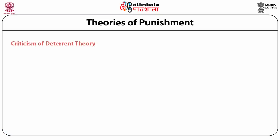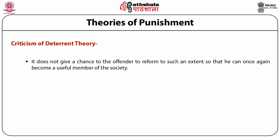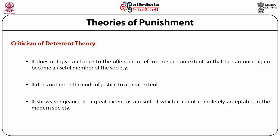Cases of harassment for dowry, dowry death, and bride burning are rampant in this country. That's one area where the deterrent theory really seems to have worked because the woman knows that the Indian state will step in and protect her the moment she makes a complaint. But there are criticisms of the deterrent theory. There's no chance for the offender to reform to the extent that he can become a useful member of society. At the very core of the deterrent theory is that you will be deprived of your liberty, and the release of the offender is unthinkable under it. The deterrent theory essentially doesn't meet the ends of justice if you want a more holistic definition of justice. It's all about vengeance, and the idea of reformation is absent — the deterrent theory is actually barbaric from its very disposition. Reformation is found in the reformative theory.